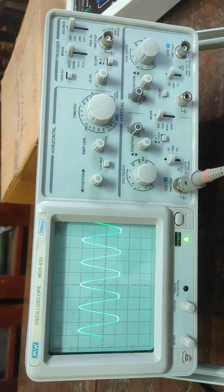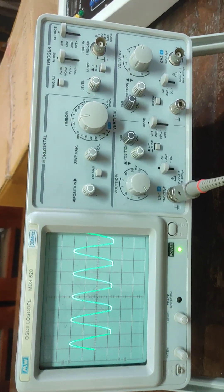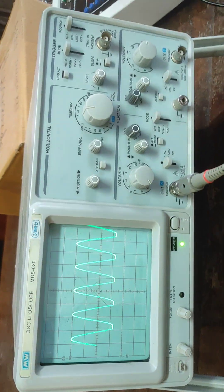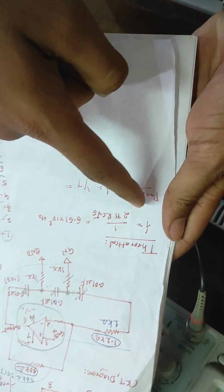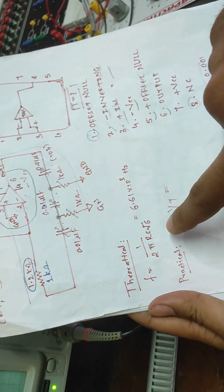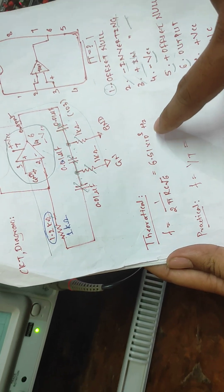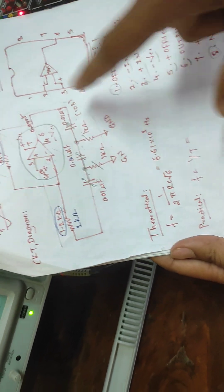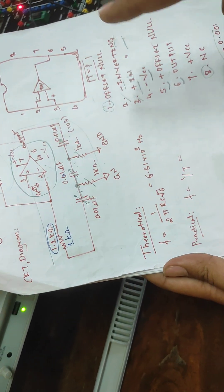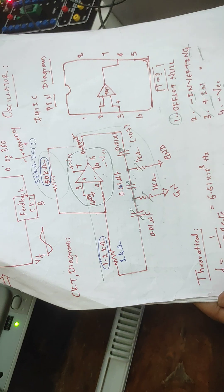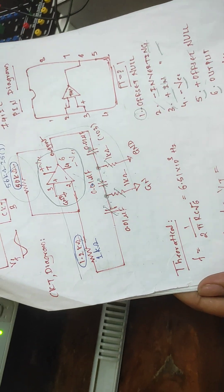To find the frequency theoretically, use the formula: f = 1 / (2π RC √6). Theoretically, this gives 6.51 × 10³ Hz using the given values. You should also find the practical value and compare. That is all about the phase shift oscillator. Thank you.